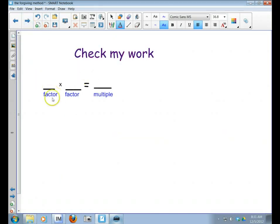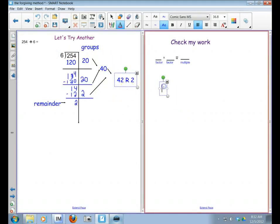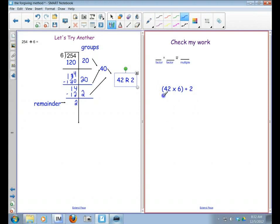So let's check. We know that it's a factor times a factor equals a multiple, but we've got that pesky remainder. So what's actually going to happen is we're going to do the 42, we're going to times it by 6, and then we're going to add the 2, which is our remainder. But remember, because of order of operations, we have to do the multiplication first. So now I've got 42 broken down into 40 and 2. So 40 times 6 equals 240. 2 times 6 equals 12. Add those up. 240 plus 12 is 252.